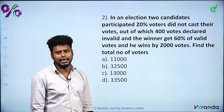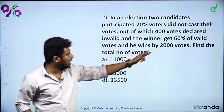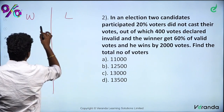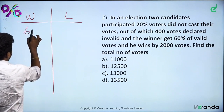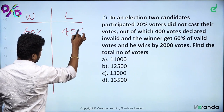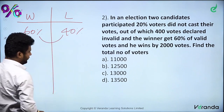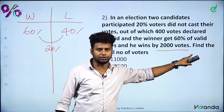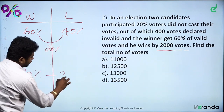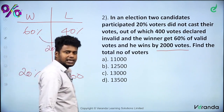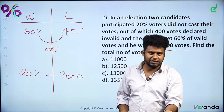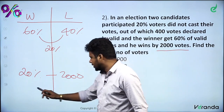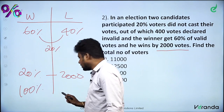How do we approach this? In the valid votes, the winner gets 60% and the loser gets 40%, so the difference is 20%. The vote difference is always equal to the percentage difference. So 20% = 2,000 votes, meaning 100% = 10,000. The total valid votes = 10,000.